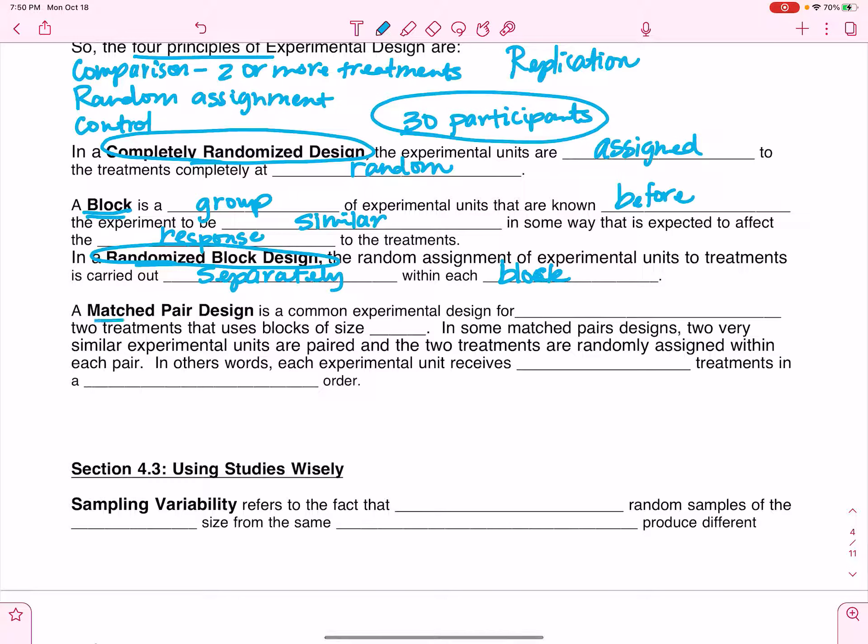Matched pair design is a common experimental design for comparing. This works great when you have two treatments. This means I'm going to compare two treatments that use blocks of size two. In some matched pair designs, two very similar experimental units are paired and the two treatments are randomly assigned within each pair. In other words, each experimental unit receives both treatments in a random order.